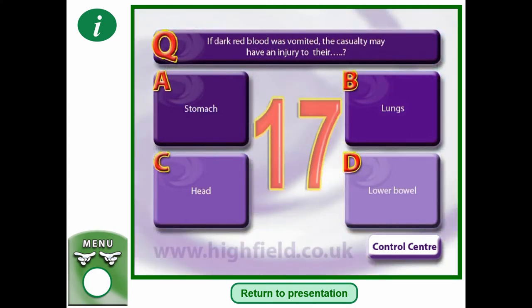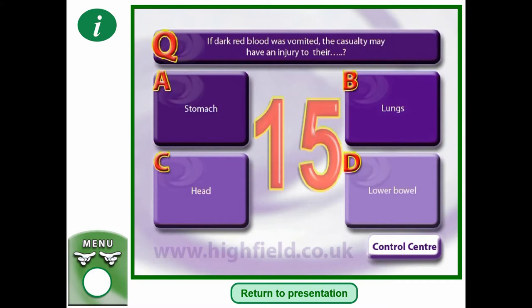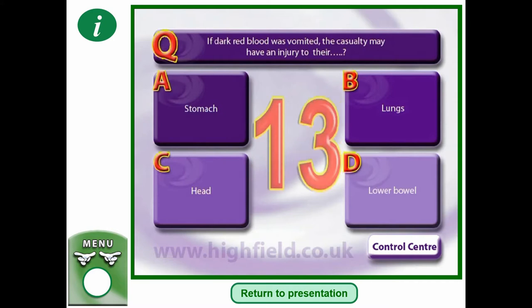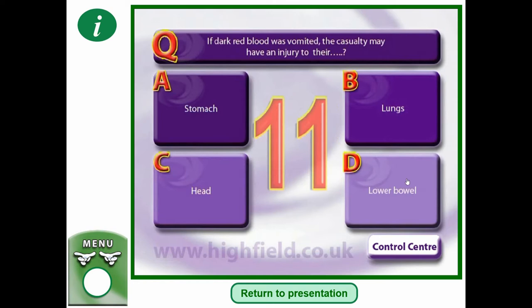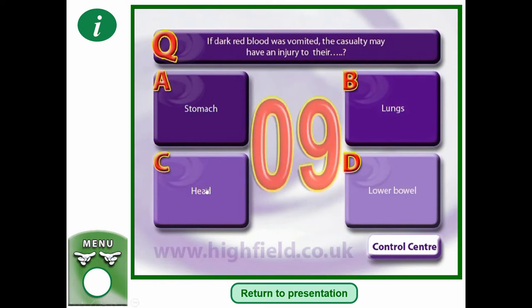Dark red blood was vomited — the casualty may have an injury to their what? Options: lungs, lower bowel, head, or stomach.